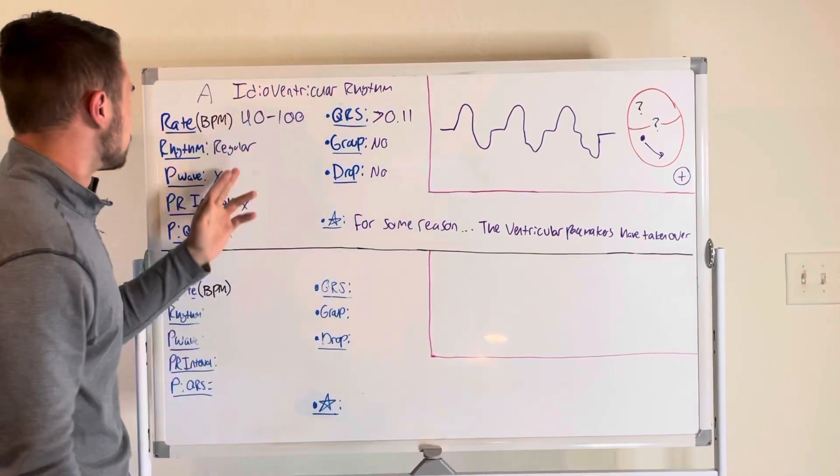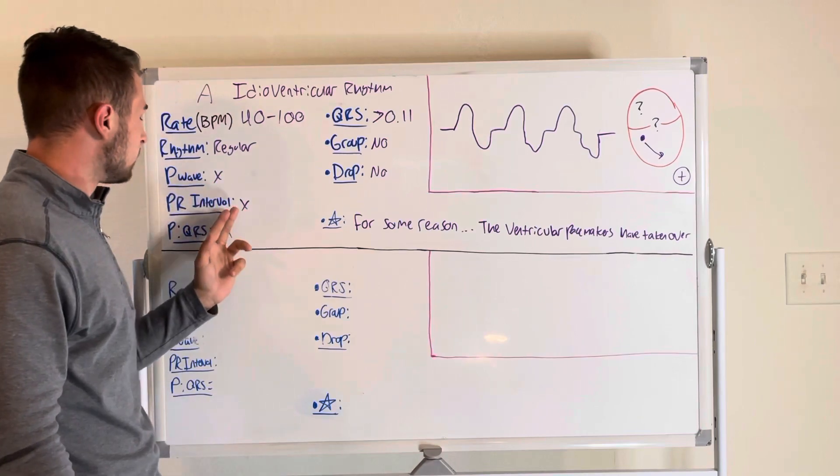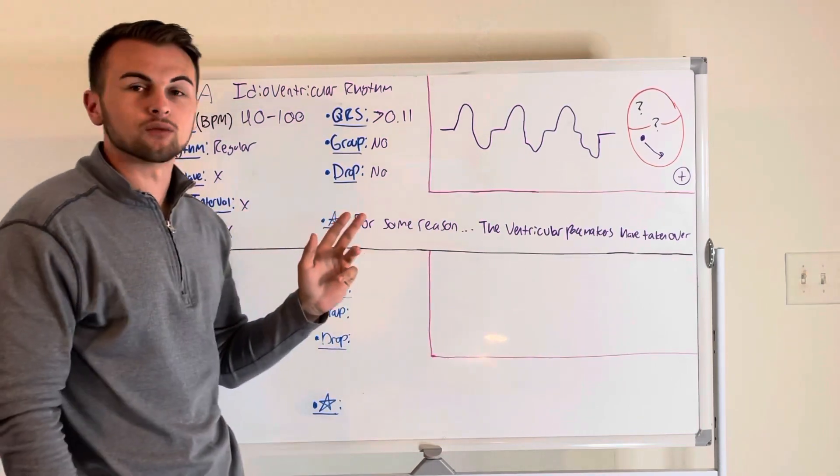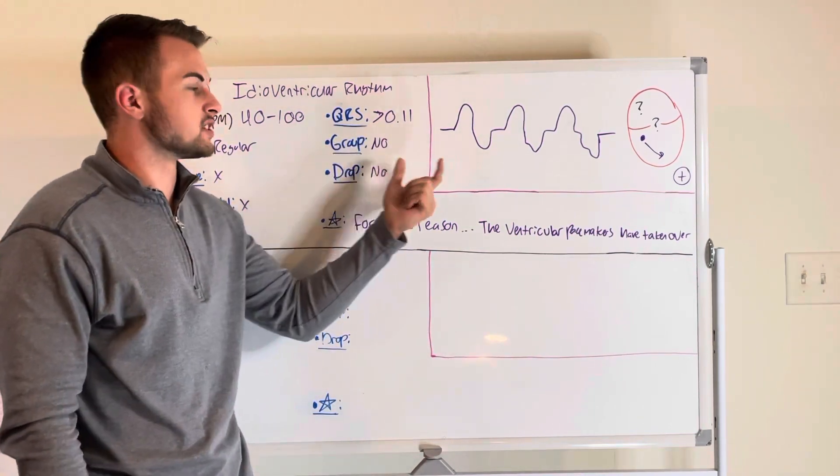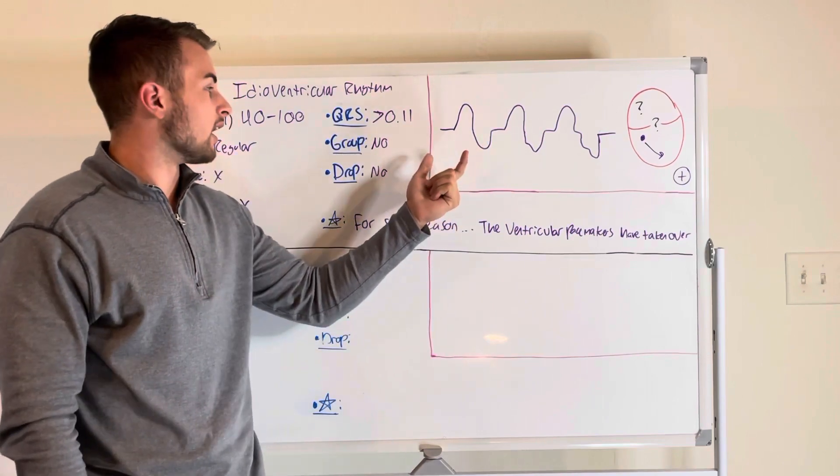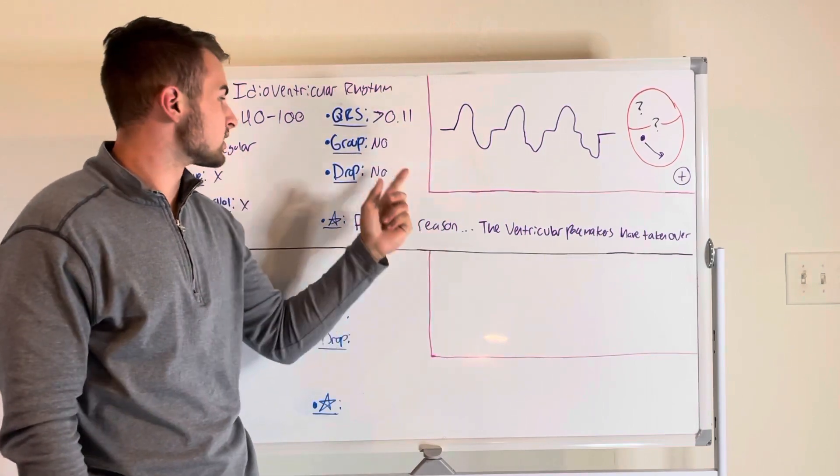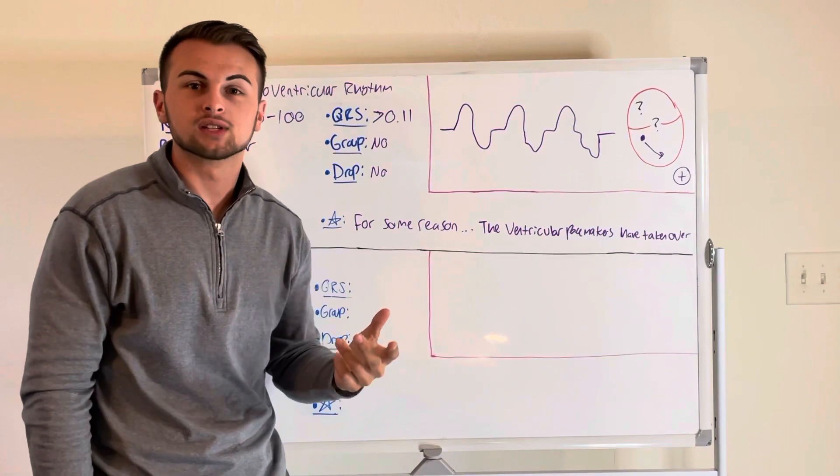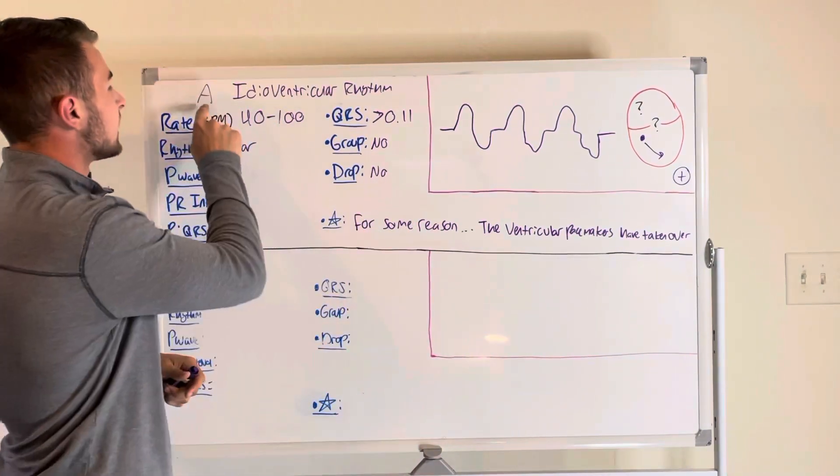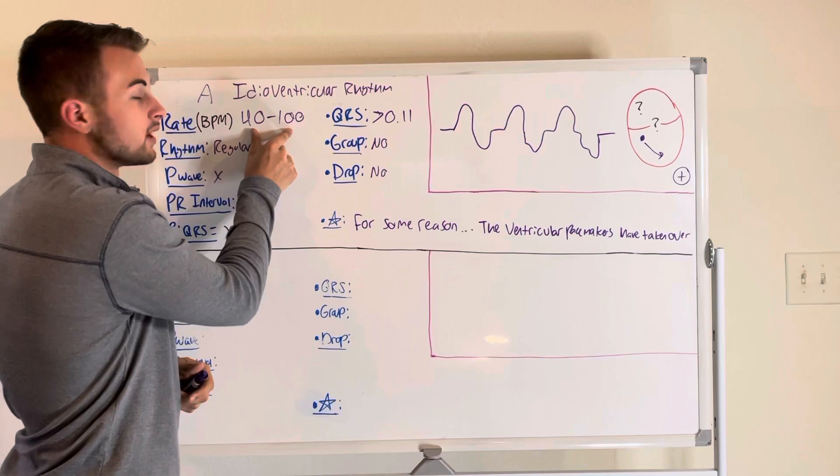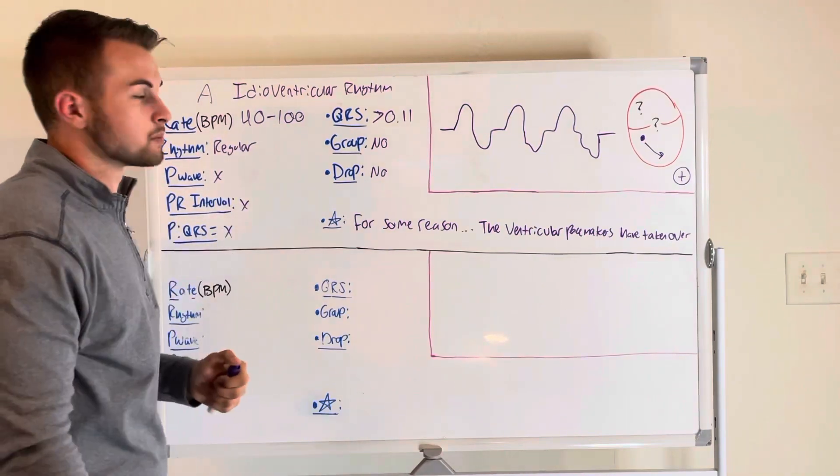Basically the rhythm is regular. There's no P wave, PR interval, or P to QRS ratio. The QRS is still wide and bizarre looking, greater than 0.11 seconds. There's no grouping and no drops. Literally the only thing that has changed is that it's accelerated to a rate of 40 to 100 beats per minute.